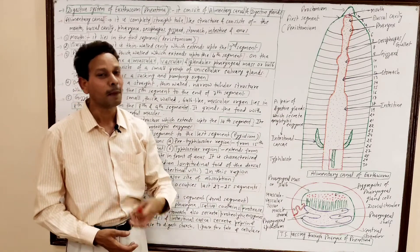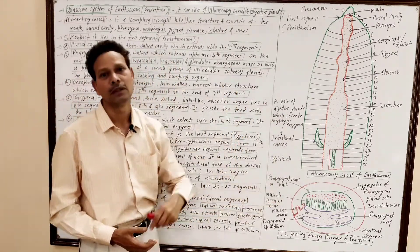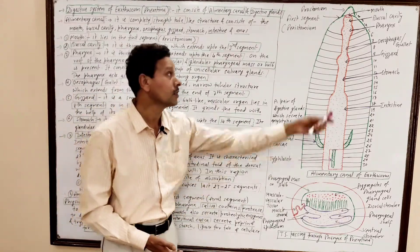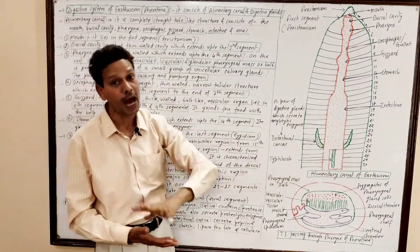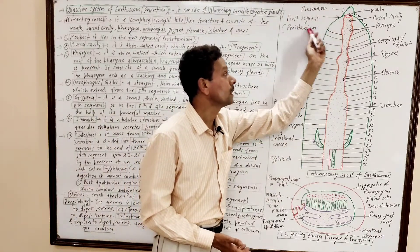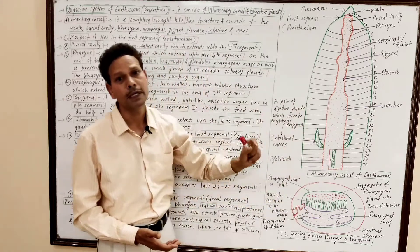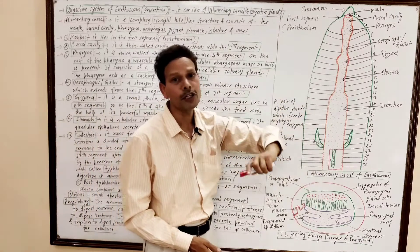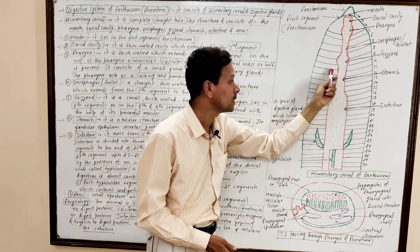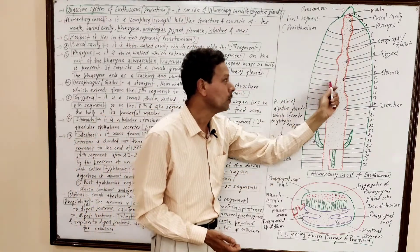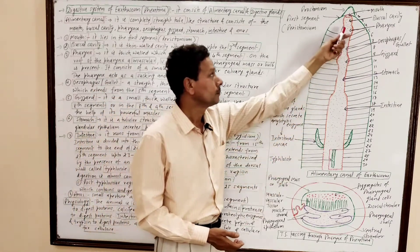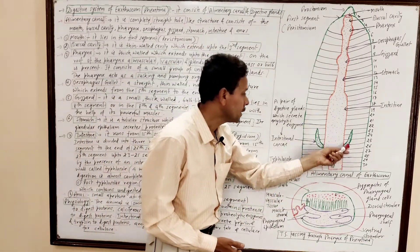This is all about the digestive system of the earthworm. To summarize: the alimentary canal is a straight tubular structure, complete, having both openings — mouth and anus. The mouth lies in the first segment, the peristomium, and the anus opens at the terminal part of the last segment, the pygidium. The canal consists of mouth, buccal cavity, pharynx, esophagus, and the mastication of food is carried out by the gizzard. The stomach lining consists of calciferous glands which produce proteolytic enzymes. The pharyngeal mass or bulb also secretes saliva having proteolytic enzymes.